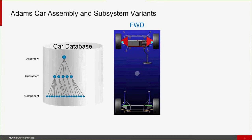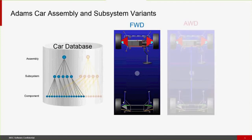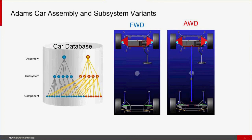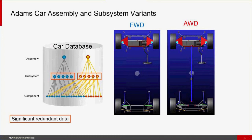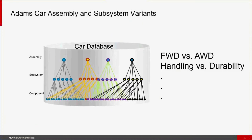Let's talk about ADAMS car assembly and subsystem variance. In an ADAMS car database, an assembly references a bunch of subsystems which reference a bunch of components. If I want a front-wheel drive and an all-wheel drive version of that vehicle, I need separate assemblies referencing subsystems — some differing, some not — resulting in significant redundant data. Your car database can get quite large creating variants for vehicle configurations such as front-wheel drive versus all-wheel drive, sport model versus standard model, or CAE-differentiated models for durability versus handling.